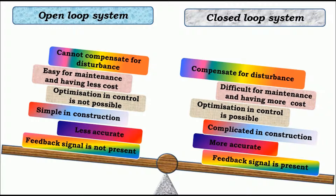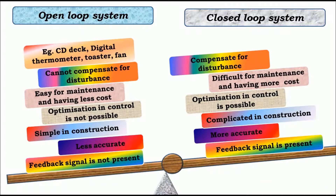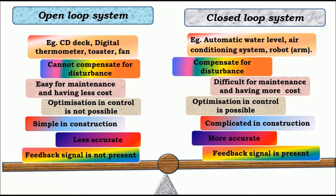Examples of open loop systems are CD deck, digital thermometer, toaster machine, and fan. Examples of closed loop systems are automatic water level maintaining system, air conditioning system, robotic arms, and CNC machines.